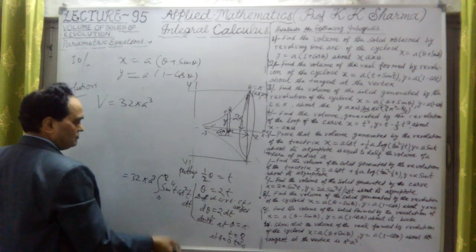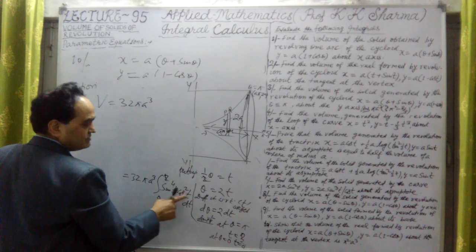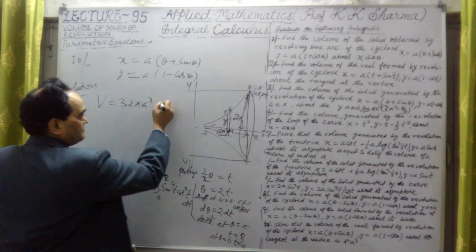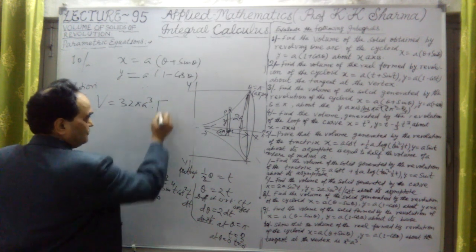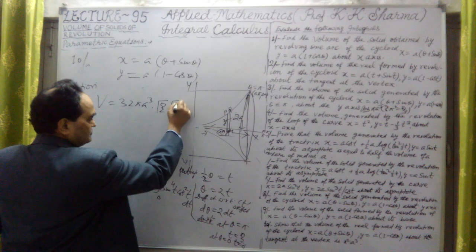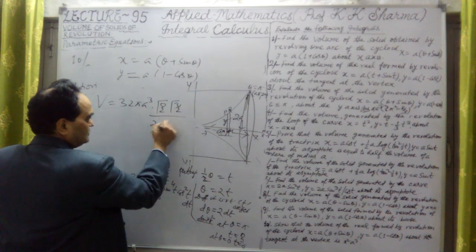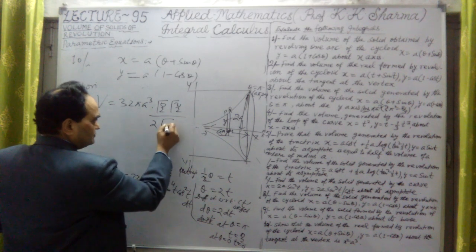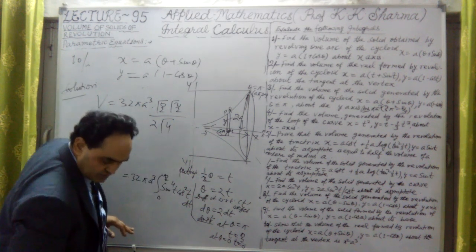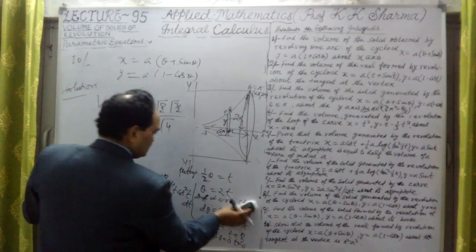By gamma function we know this, I'll write the formula later. This is sine 5 and cos squared, it will be gamma (5/2) gamma (3/2) divided by 2 gamma 4. This is the value.